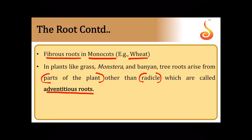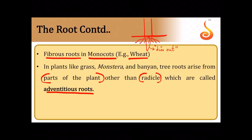A fibrous root is also a form of adventitious root because in fibrous roots, there is a main axis that develops initially and very soon dies out, and then a bunch of roots originate from the base of the stem. So we can consider these roots which originate from the base of the stem, making up the fibrous root, as adventitious roots.